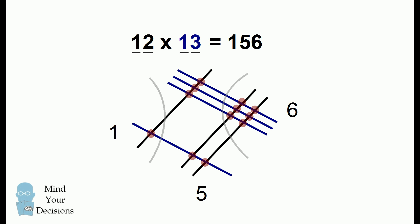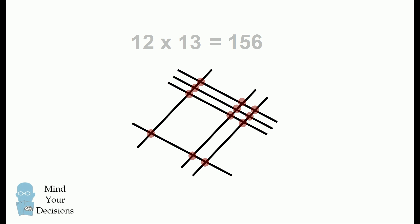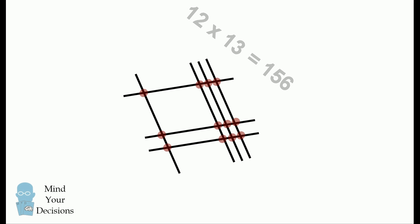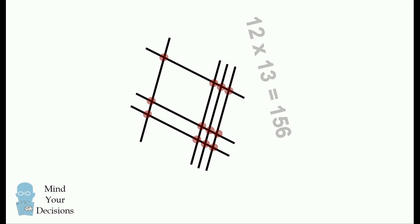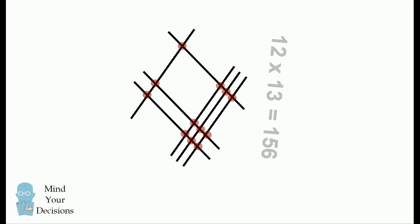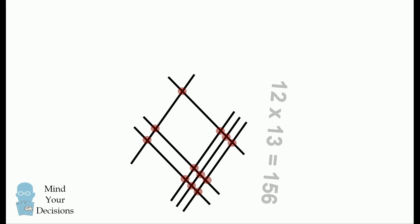But there's a cool thing you can do now that you've drawn the diagram. Let's remove some of the labels. Now what we're going to do is rotate this entire diagram 90 degrees. And the thing I discovered is that you now get a new diagram, and this can solve a new multiplication problem.